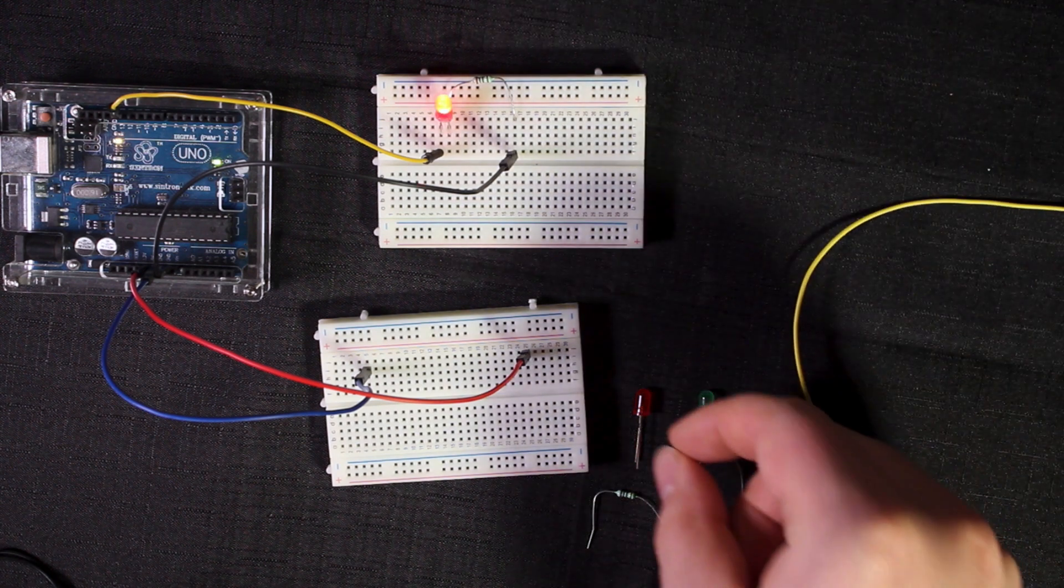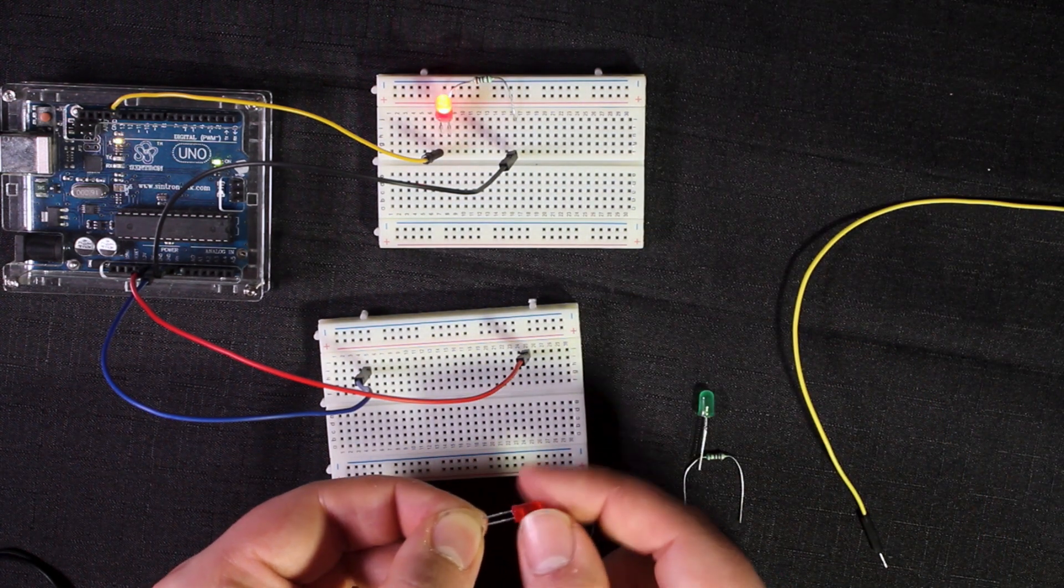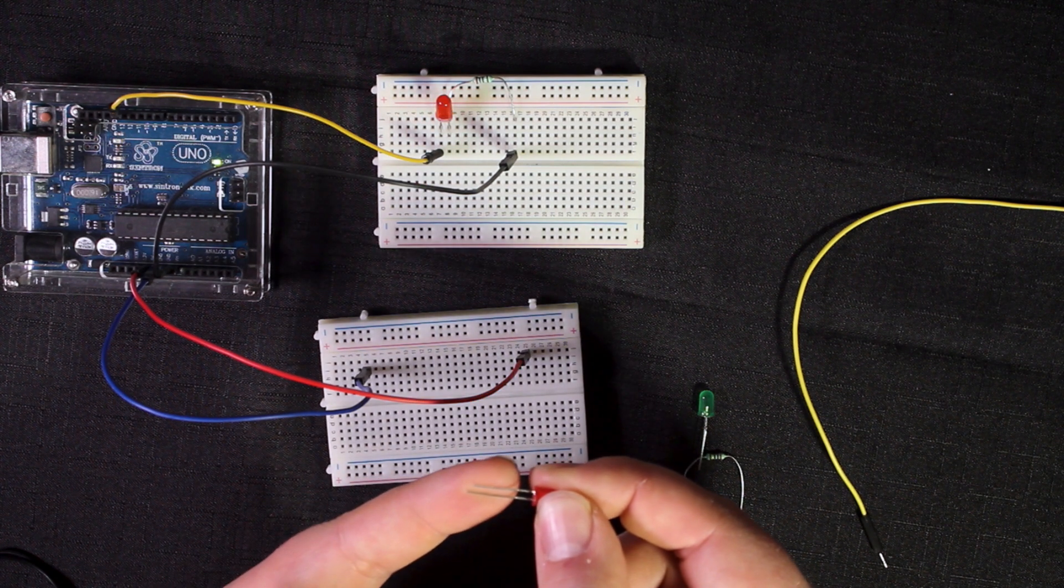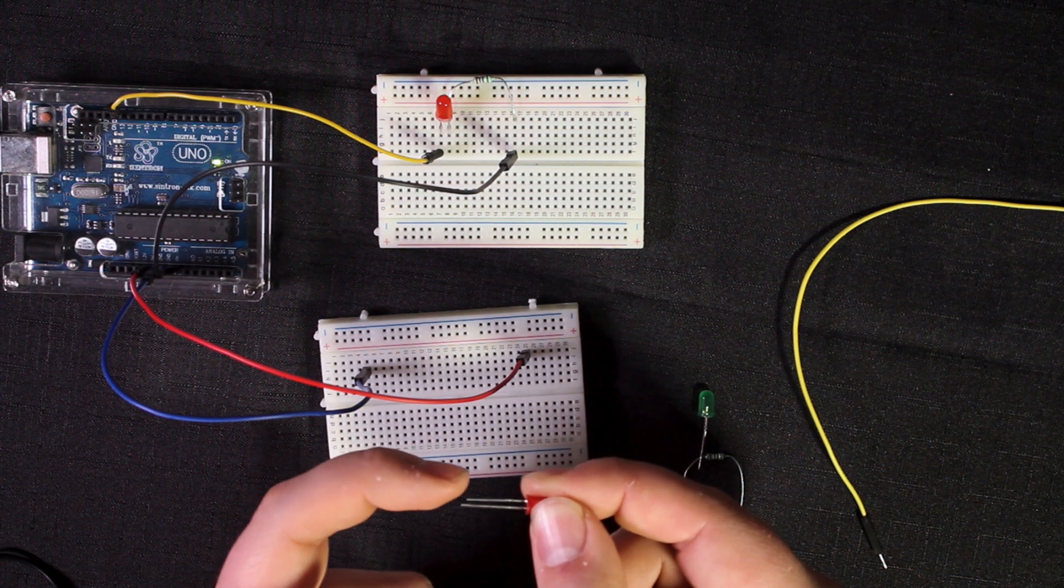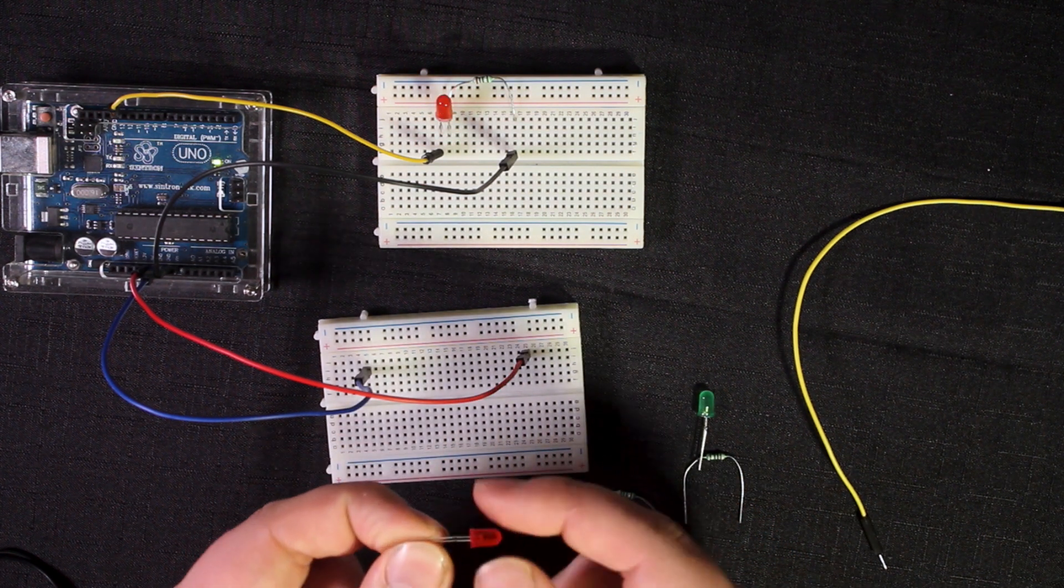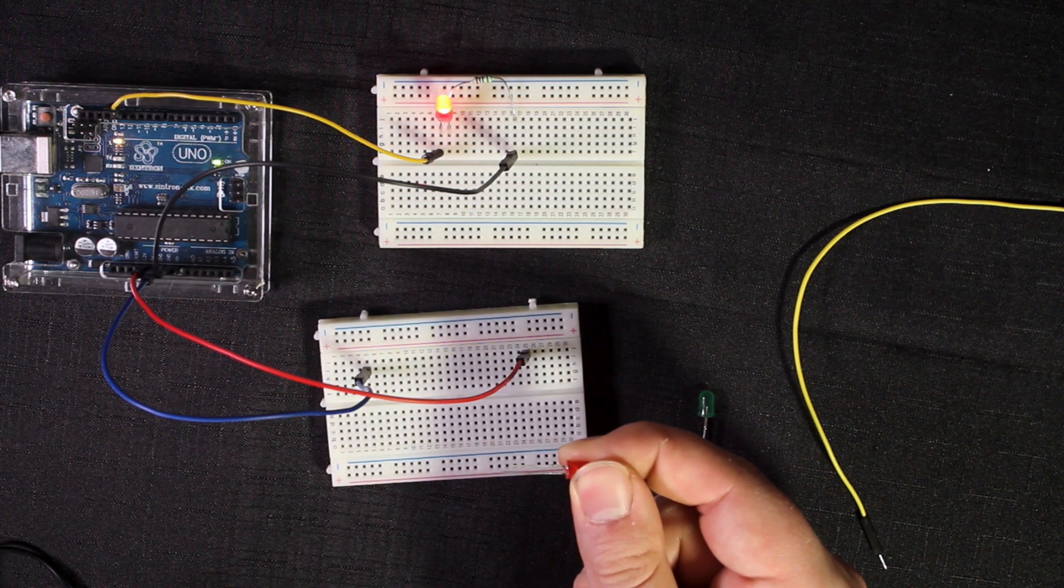To start off with we need to get one of the LEDs. There are different lengths of legs. The short leg, also denoted by a flat edge, is your negative, and the long leg is your positive. This is important to make sure they go in the right way around.